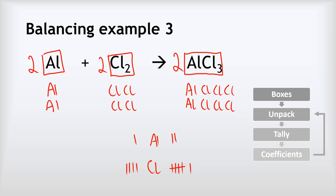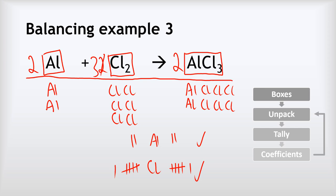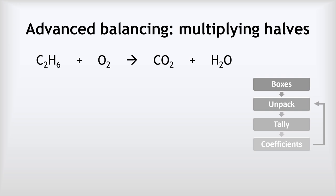Now I don't have enough aluminiums or chlorines on the left. I update aluminium by putting 2 in front of Al, and the chlorine coefficient of 2 isn't enough so I change it to 3 in front of Cl₂. Unpacking and updating the tally gives 2 aluminiums left and right and 6 chlorines left and right. The balanced equation is 2Al + 3Cl₂ → 2AlCl₃. The key lesson: sometimes your first coefficient won't be right — just keep working around the steps until it balances.